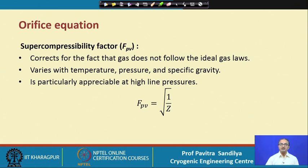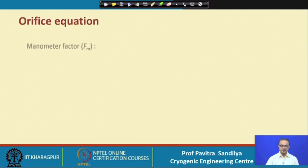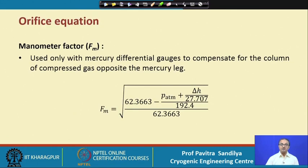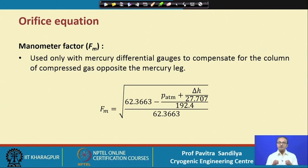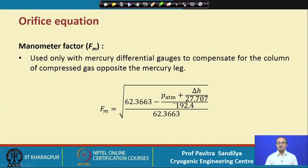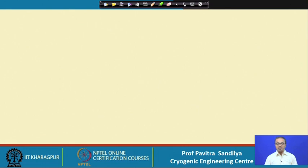The manometer factor compensates for the column of compressed gas. Whenever the manometer contains a liquid such as water or mercury, the presence of mercury causes compression of the gas, which may change the measured delta P. This correction accounts for the presence of mercury in the manometer.